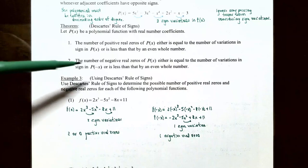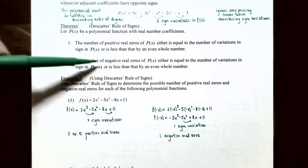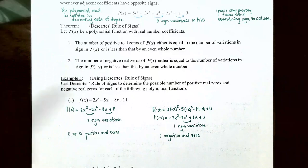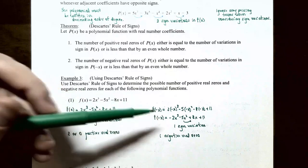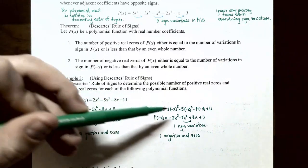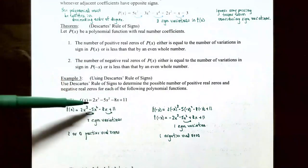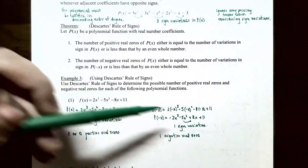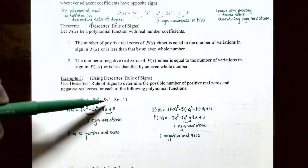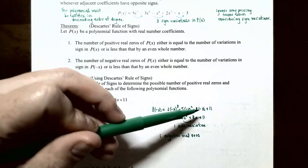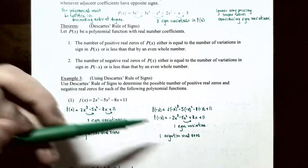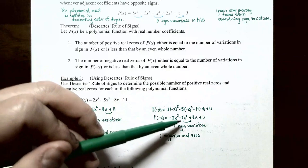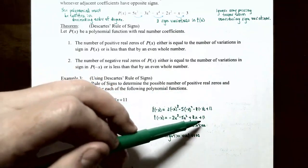For negative real zeros, we need to evaluate f of negative x — replacing all the x's with negative x in parentheses. So f of negative x gives us 2 times negative x cubed, minus 5 times negative x squared, minus 8 times negative x, plus 11. After simplifying, f of negative x equals negative 2x cubed minus 5x squared plus 8x plus 11.